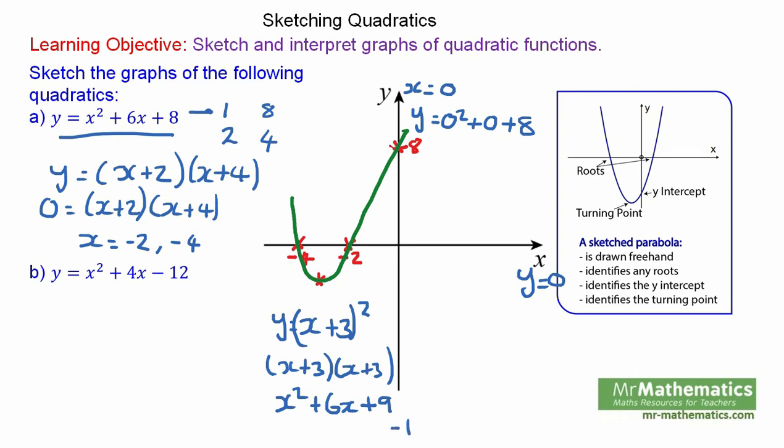But we do not want the 9, we want 8. So we have to take away 1. So the coordinates of the turning point is x equals minus 3 and y equals negative 1.